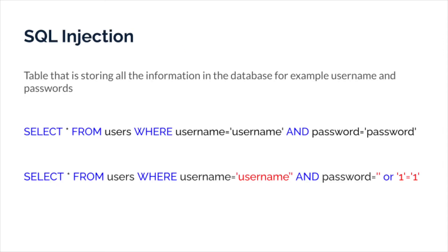Let's take a look at how SQL queries are crafted. In a basic example: SELECT * FROM users WHERE username = 'username' AND password = 'password'. These are the column values where the username equals the username and the password equals the password. We're going to explore how these queries are actually structured.